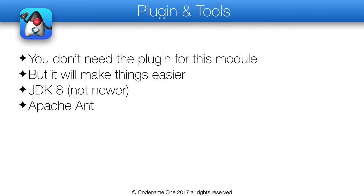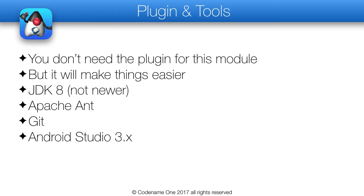Apache Ant can be downloaded from the Apache website. Make sure Ant is in your system path and that the command runs. Note that you will need to define the JAVA_HOME environment variable properly. Git is optional — you can download the zip from GitHub, but if you'd like to contribute pull requests back into the project this can be useful. For Android development we'll use Android Studio 3, which you can download from Google. For iOS development we will use Xcode 9.x from Apple.